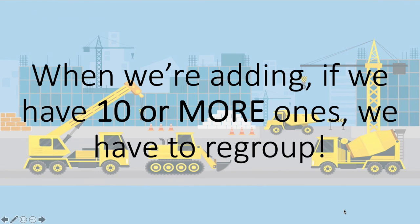So remember, when we're adding, if we ever have ten or more ones, we have to regroup — we have to make a group of ten. That means if we have ten ones, we have to regroup. If we have eleven ones, we have to regroup. Twelve, thirteen, fourteen, fifteen — we have to regroup. Because anytime we have ten or more ones, we have to regroup.